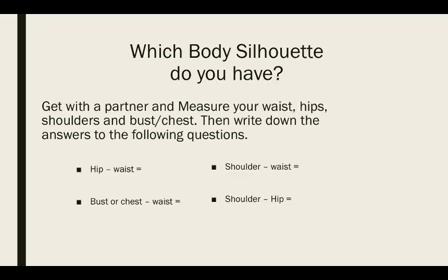So, go ahead and get with a partner, measure your waist, hip, shoulders, bust, and then write down the answering. You're going to go hip minus waist equals bust or chest minus your waist equals shoulder minus waist equals shoulder minus hip equals. This is going to help you figure out what shape you have.